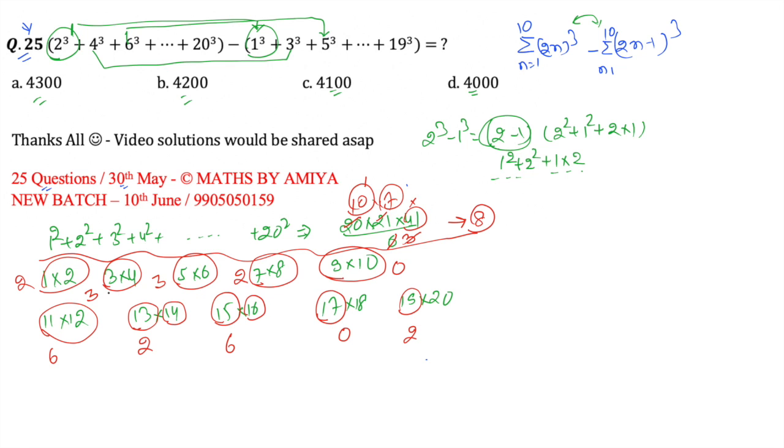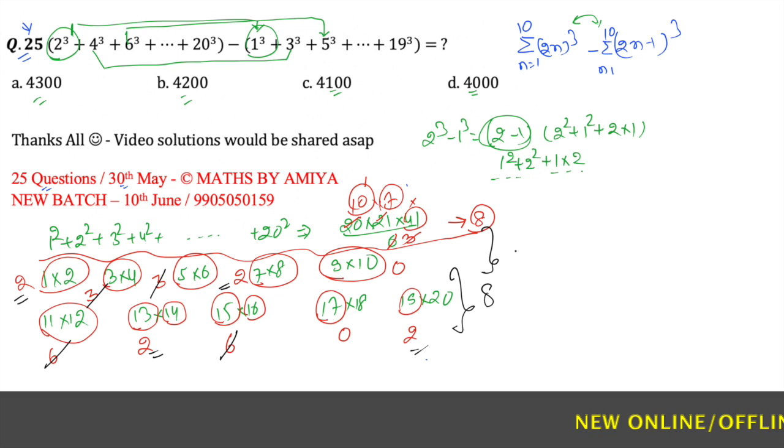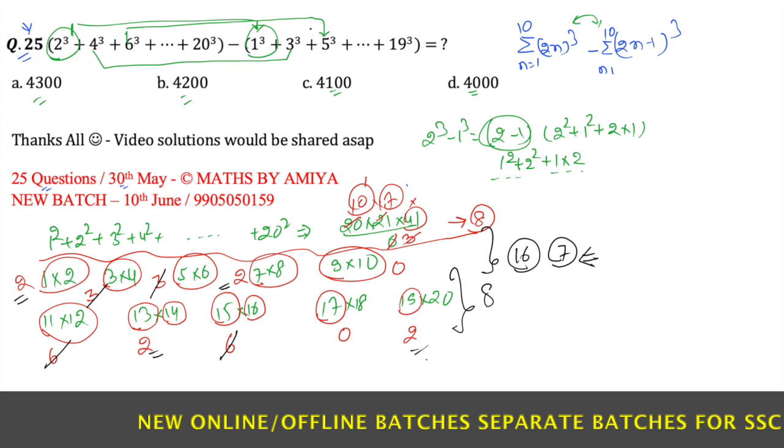Now it's time to get the digital sum. Since 6, 3, 9 cancel out, 6, 3, 9 cancel out, we're left with 1, 2, 3, 4. So the digital sum of this part is also 8. 8 plus 8 is 16, so the digital sum is 7. So the digital sum of this calculation is 7.